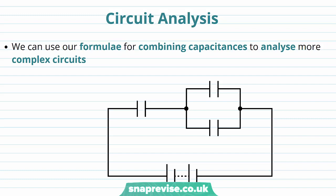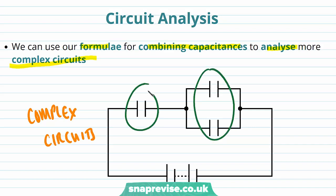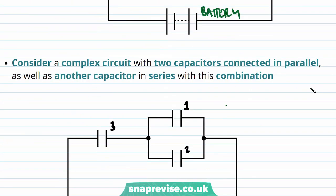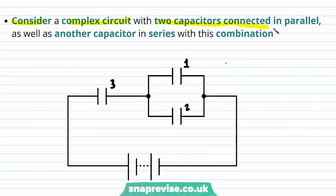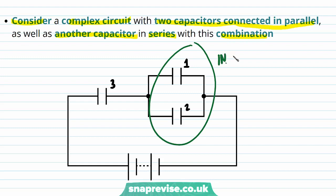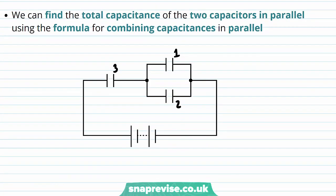We are now going to do some circuit analysis. We can use our formulae for combining capacitances to analyse a more complex circuit. Here is an example of a more complex circuit containing three capacitors — two connected in parallel, and one connected in series with that parallel combination. We can find the total capacitance of the two capacitors in parallel using the formula for combining capacitances in parallel: the total capacitance is equal to the capacitance of the first capacitor plus the capacitance of the second capacitor.